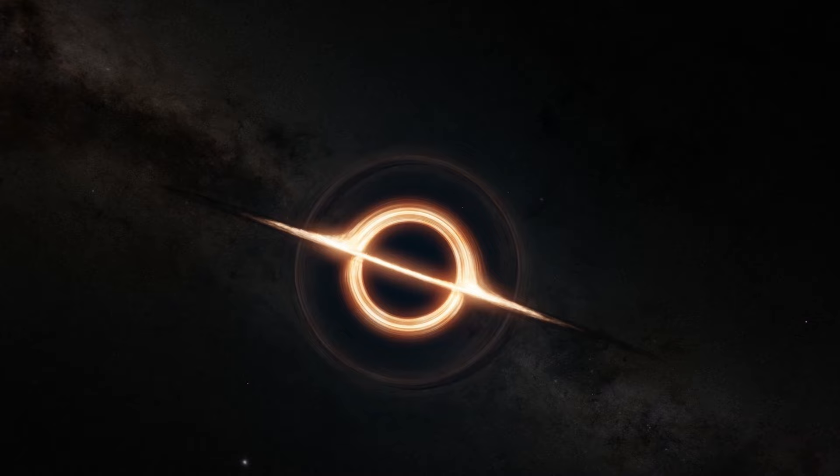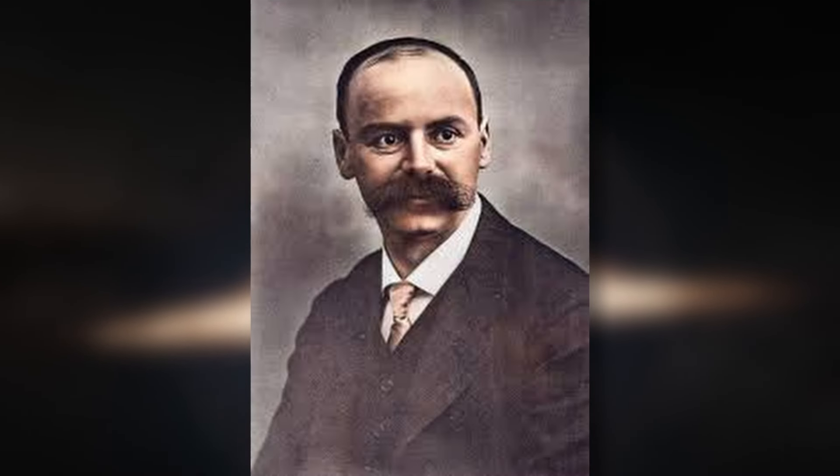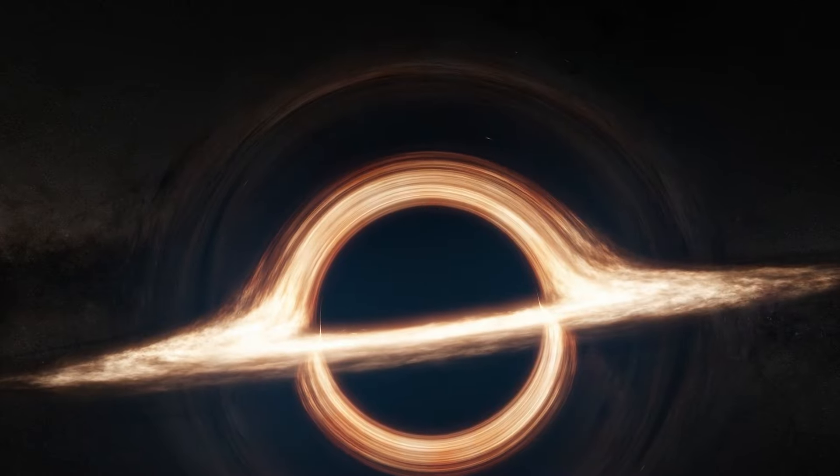The term black hole was made popular by American theoretical physicist John Wheeler in 1967. Black holes were first predicted by Albert Einstein's theory of general relativity in 1915. It came as the first exact solution to Einstein's equations, solved by Carl Schwarzschild. It described a spherical black hole.